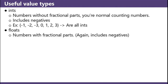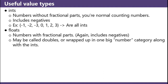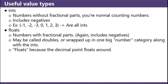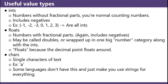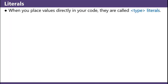Floats: numbers with fractional parts. Again, this includes negatives. May be called doubles or wrapped up in one big number category along with ints. Floats — because the decimal point floats around. Chars: single characters of text. Example: the letter A. Some languages don't have this and just make you use strings for everything. Literals: when you place values directly in your code, they are called type literals, so int literal, char literal.